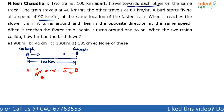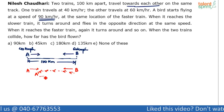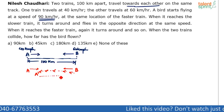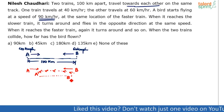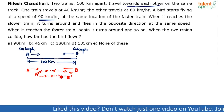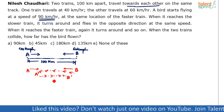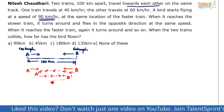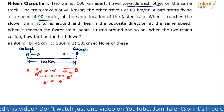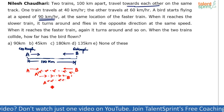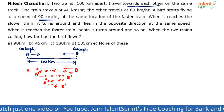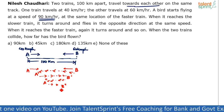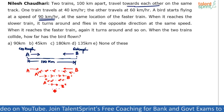Now the bird turns around and flies back in the opposite direction. But again, it doesn't have to travel the whole distance back to B, because Train B is also moving. So it meets Train B at a new, closer position. Then it turns around again, meets Train A at yet another point — A-double-dash — and so on. This to-and-fro motion keeps happening.